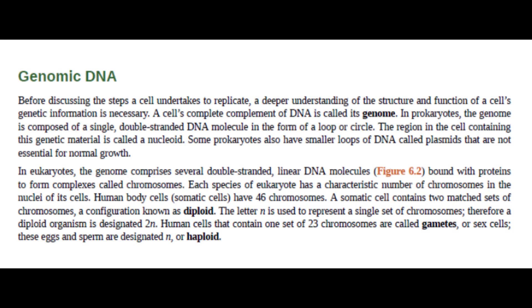In eukaryotes, the genome comprises several double-stranded linear DNA molecules bound with proteins to form complexes called chromosomes. Each species of eukaryote has a characteristic number of chromosomes in the nuclei of its cells. Human body cells, or somatic cells, have 46 chromosomes. A somatic cell contains two matched sets of chromosomes, a configuration known as diploid. The letter N is used to represent a single set of chromosomes; therefore, a diploid organism is designated 2N. Human cells that contain one set of 23 chromosomes are called gametes, or sex cells. These eggs and sperm are designated N, or haploid.